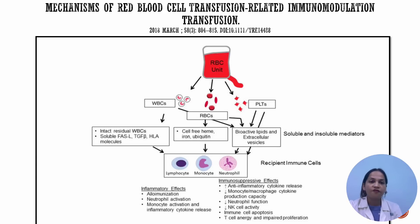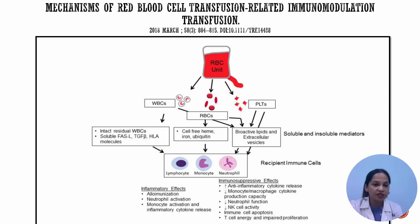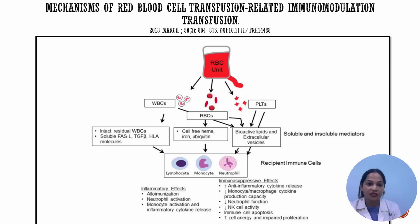When there is an allogeneic blood transfusion, along with the blood component, some soluble and insoluble mediators and cells are also transfused — intact and residual WBCs, soluble FAS ligand, HLA molecules, TGF-beta, and if there is red cell lysis, cell-free heme, iron, or ubiquitin. Bioactive lipids and extracellular vesicles are also transfused. These mediators affect the recipient immune system, leading to TRIM effects. The inflammatory TRIM effects are alloimmunization, neutrophil activation, monocyte activation, and inflammatory cytokine release. The immunosuppressive effects are increased anti-inflammatory cytokine release, decreased monocyte/macrophage cytokine production, decreased neutrophil function, decreased natural killer cell activity, immune cell apoptosis, and T cell anergy and impaired proliferation.